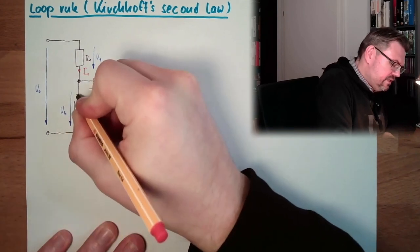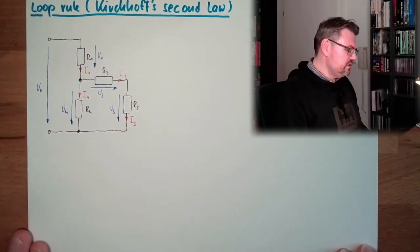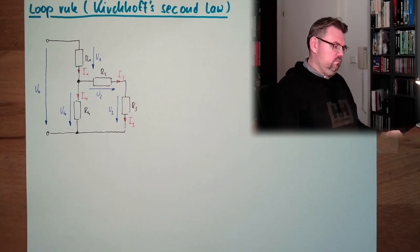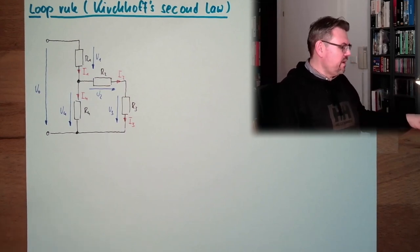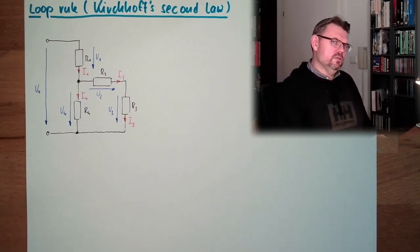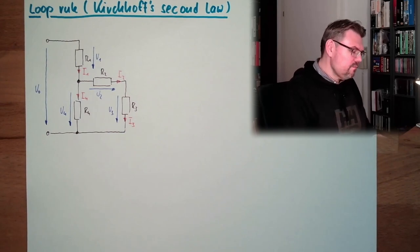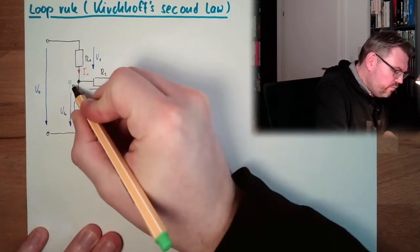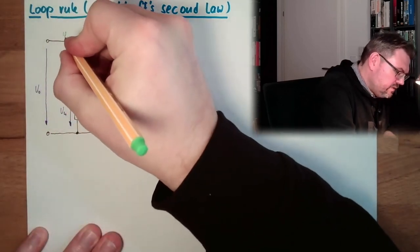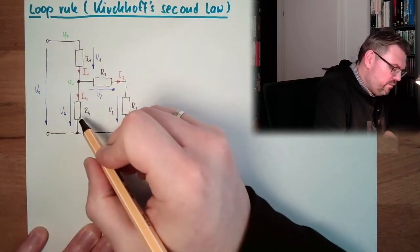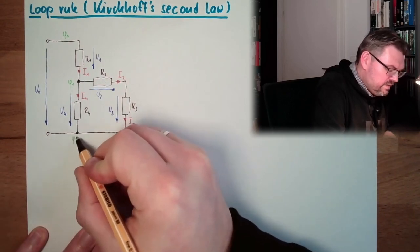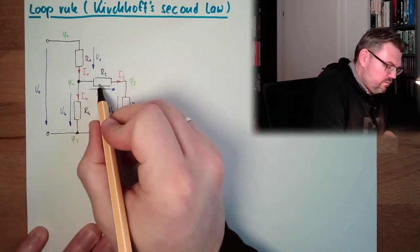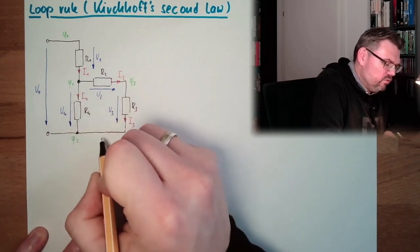This is our loop. Now let's think about the potentials. Let's start here. Here we have a potential I call it V1. Here we have a potential we call it V0 and V1 and here we have then a potential I call it V2. This is the same all here is the same and here we have V3.